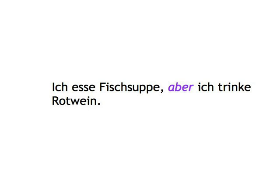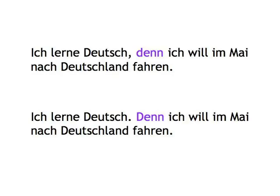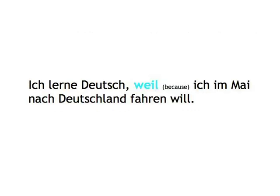There is one last coordinating conjunction: denn, 'because,' which indicates the reason why something is done. This reason is expressed in the form of an independent clause that can stand alone. Ich lerne Deutsch, denn ich will im Mai nach Deutschland fahren. Now, if one clause is dependent on another and can't stand alone, we call it a dependent clause, and the link word is a subordinating instead of a coordinating conjunction. The dependent clause needs the main clause to give it meaning, and the conjunction signals this pecking order. Ich lerne Deutsch, weil ich im Mai nach Deutschland fahren will. Weil is the subordinating version of denn.